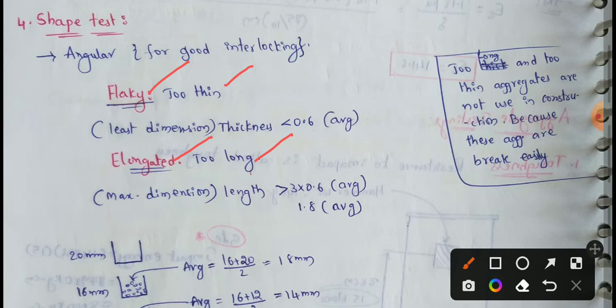As per IRC, we should avoid aggregates that are too long or too thin. If we use angular-shaped aggregate, it will provide good interlocking.